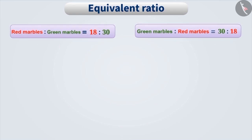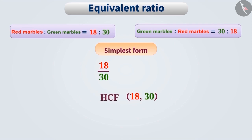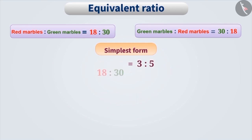By looking at these two ratios, you must understand that in a ratio, order is very important. Any ratio can be expressed in its simplest form. To do this, we first express the ratio as a fraction — for example, 18 is to 30 becomes 18 by 30. Then we divide the numerator and denominator by their HCF. The HCF of 18 and 30 is 6, so dividing both by 6 gives us 3 by 5, and 3 is to 5 is the simplest form of the ratio 18 is to 30.